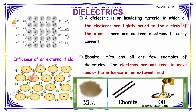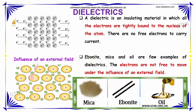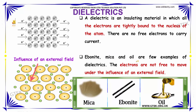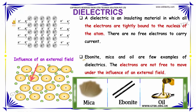There are no free electrons to carry the current. Ebonite, mica, and oil are some of the examples of dielectrics.